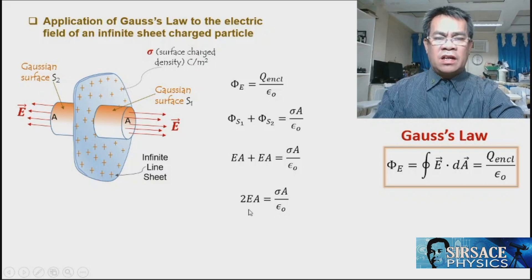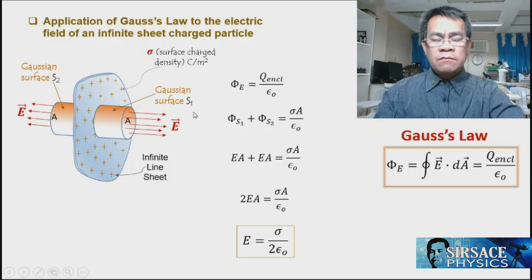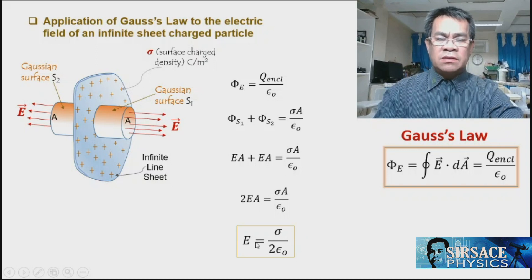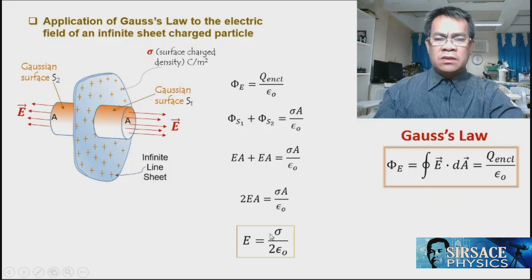Cancelling area A from both sides, the electric field of an infinite sheet is E = σ / (2ε₀). Notice that the electric field does not depend on distance — at any point from the sheet, the electric field is σ / (2ε₀).